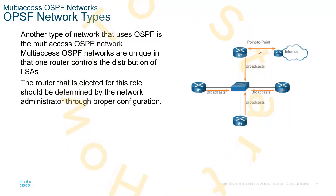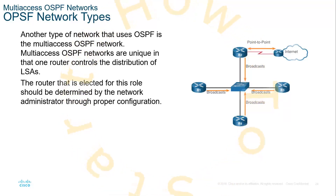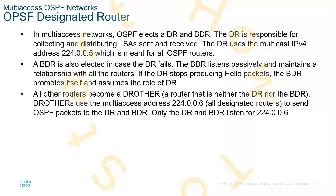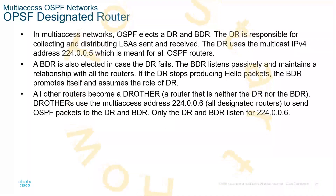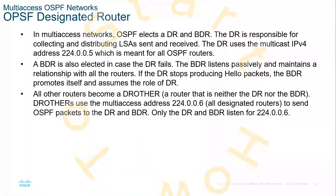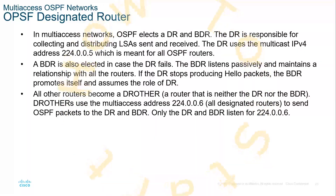The router elected for the role should be determined by the network administrator through proper configuration, as opposed to an election — hence setting the appropriate router IDs so that the administrator can properly set which router will become the designated router. In a multi-access network, OSPF will elect a designated router and a backup designated router. The DR is responsible for collecting and distributing LSAs sent and received. The DR will use the multicast address 224.0.0.5, which is basically a clever way of saying all OSPF routers on that network. So the primary designated router will be the one sending and receiving the LSAs.